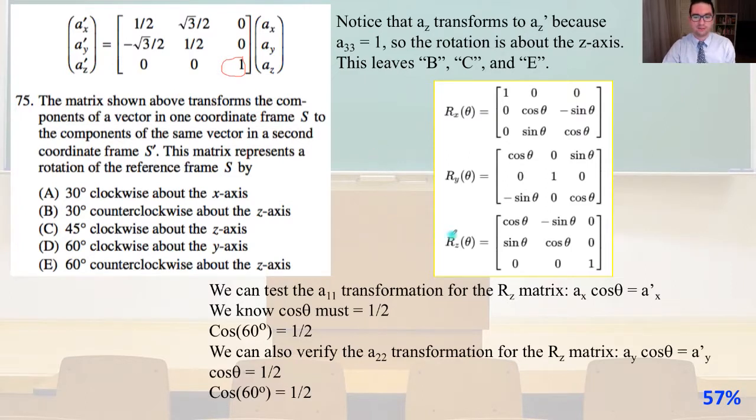So let's look at our rotation matrix for RZ. We can test the A11 transformation for the RZ matrix. So AX cosine theta equals A prime X. So we know cosine theta must equal 1 half. What degree equals 1 half when you plug it into the cosine function? Cosine of 60 degrees equals 1 half. We can also verify the A22 transformation for the RZ matrix. AY cosine theta equals A prime Y. Cosine theta again is going to equal 1 half. So theta again equals 60 degrees. And so that right there shows that the answer must be E.